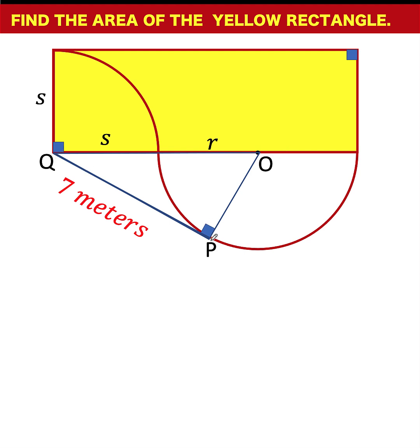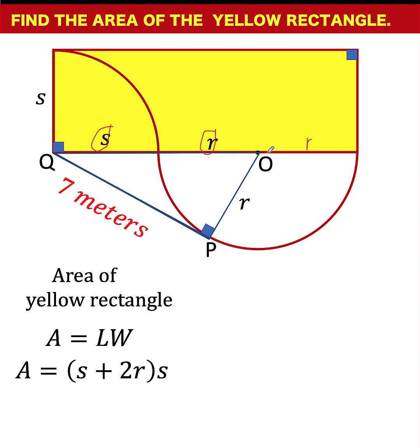Since OP is also a radius of the semicircle, the length OP is also r units. Now from here, let's form some equations. The area of the yellow rectangle is equal to its length times its width. The length of this yellow rectangle is s plus r and another radius here. So that is s plus 2r, and its width is s units.